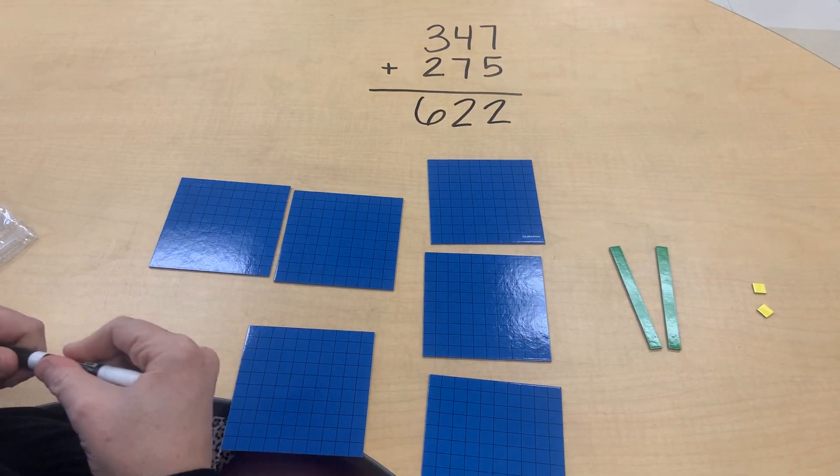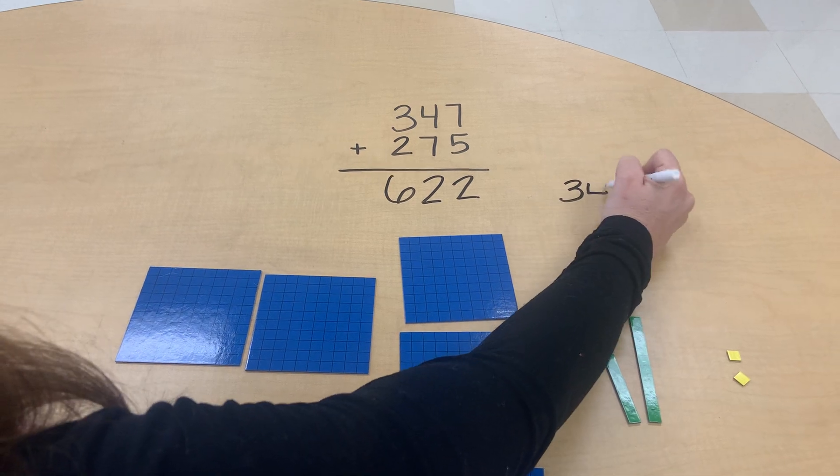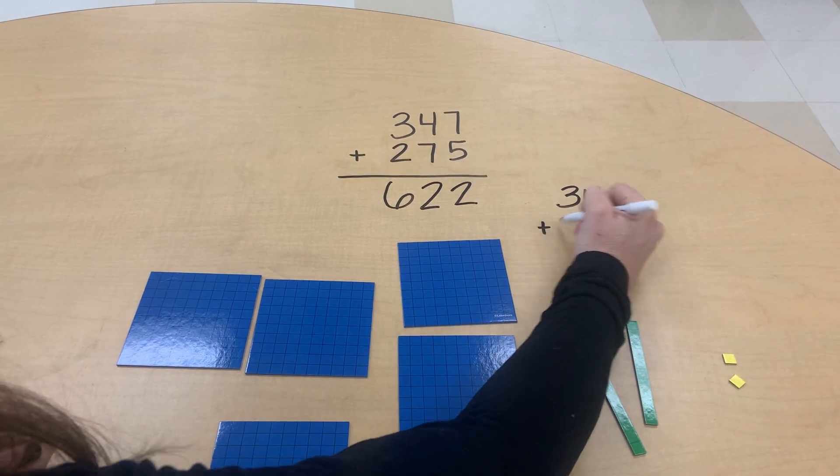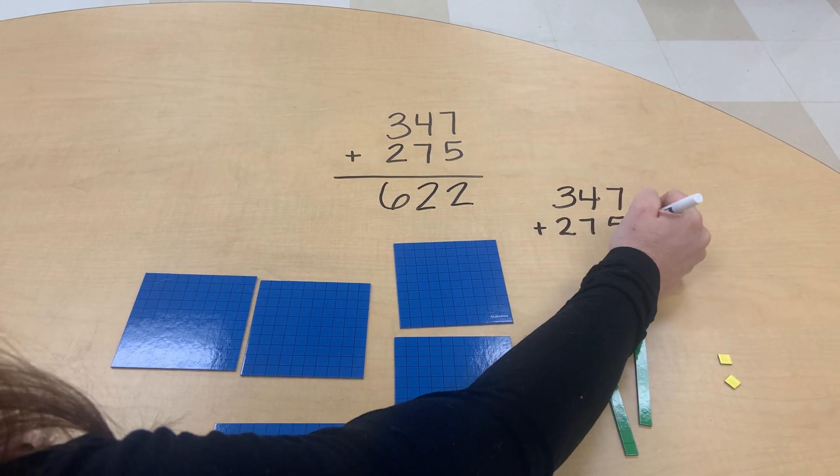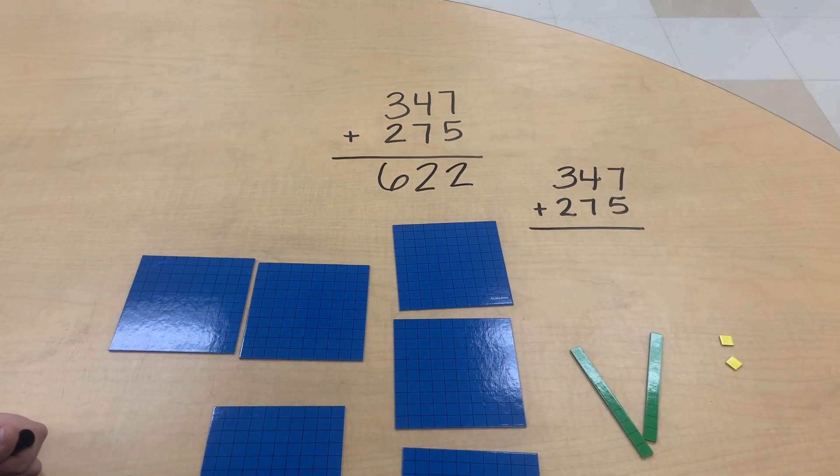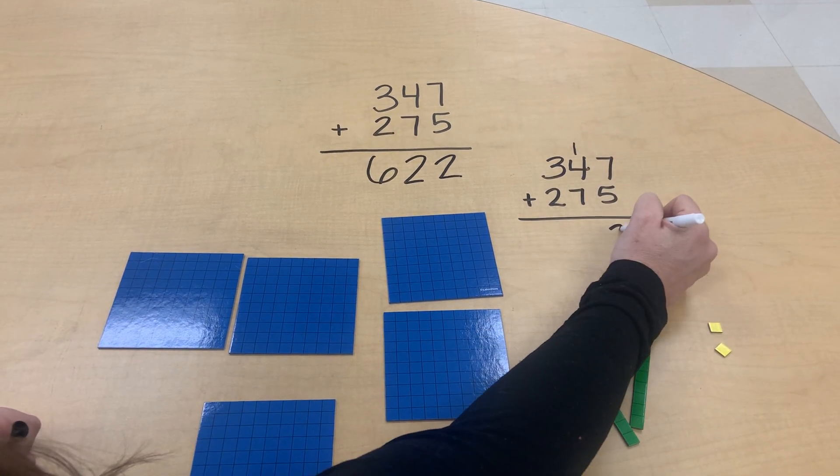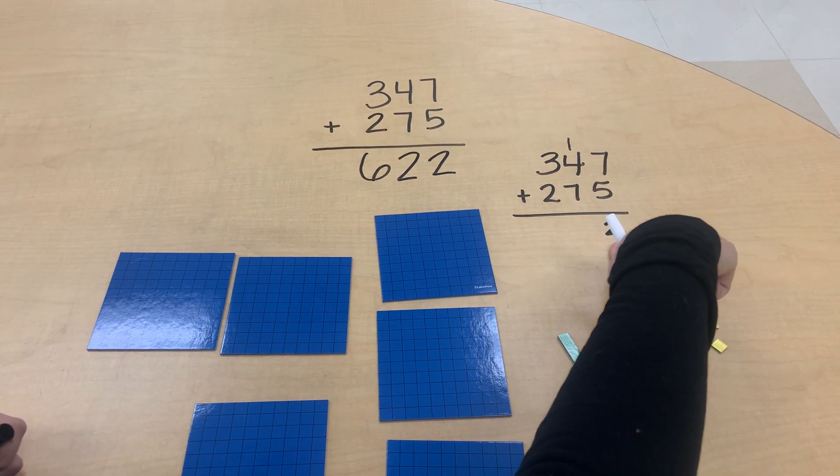So our answer is six hundred twenty-two. And for those of you who know just standard algorithm, we know that seven plus five is twelve.